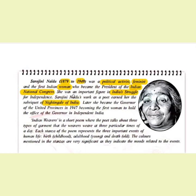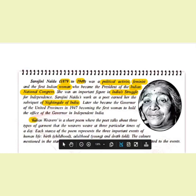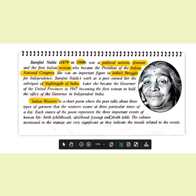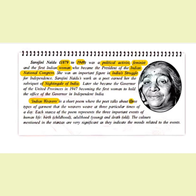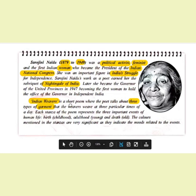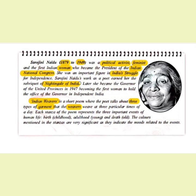Indian Weavers is a very short poem consisting of hardly twelve lines, but it has a very long meaning — one that is applicable to each one of us in our lives. In this poem, we are going to talk about three different garments woven by the weavers, and each stanza represents a particular time of day: morning, then evening, and night.